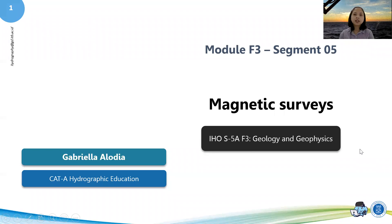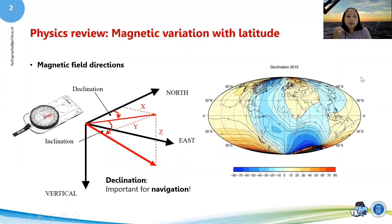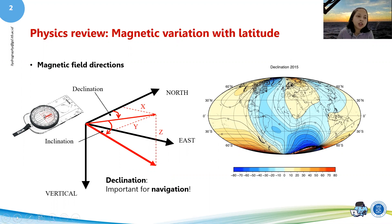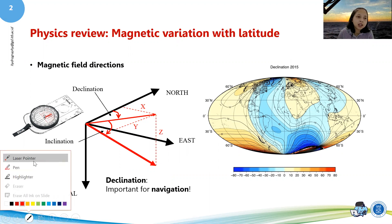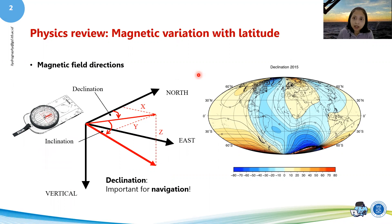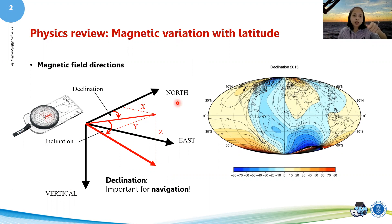So magnetic surveys — we will start again with a physics review. There is magnetic variation with latitude, which is a key concept in magnetics. One thing you also need to know is your magnetic field direction. Every magnetic field has a three-dimensional direction: you have your declination, which is horizontal, and your inclination, which is vertical.